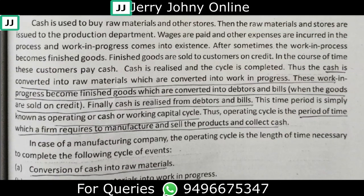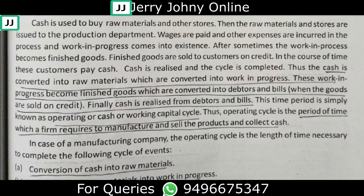Raw materials are converted into work in progress, work in progress becomes finished goods, finished goods are converted into debtors and bills, and finally cash is realized from debtors and bills. This is also known as the cash cycle, or operating cycle, or working capital cycle. The operating cycle is the period of time a firm requires to manufacture and sell the product and collect cash.